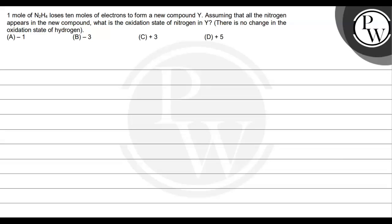Hello, Baccham. Let's see this question. The question says: 1 mole of N2H4 loses 10 moles of electrons to form a new compound Y. Assuming that all the nitrogen appears in the new compound,